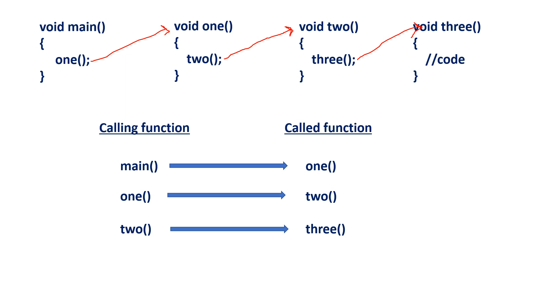In this way, we can identify which one is a called function and which one is a calling function. Simply, a function that calls another function is called a calling function, and a function that is called by another function is called a called function. Thank you.